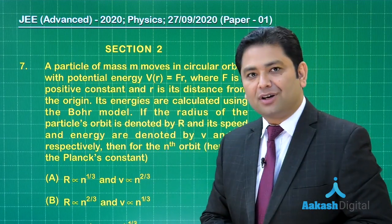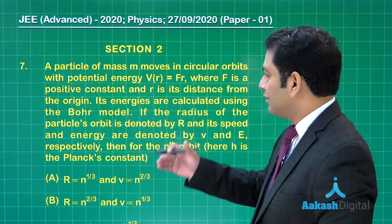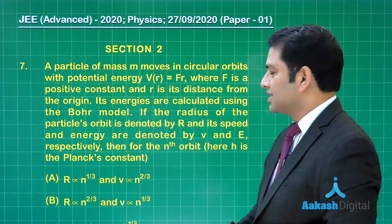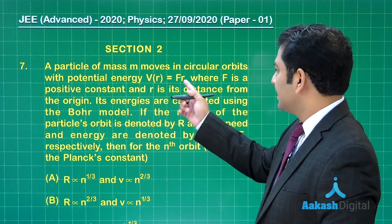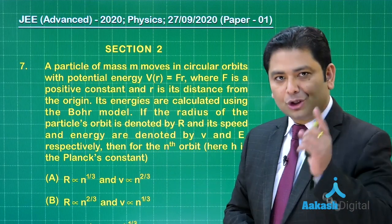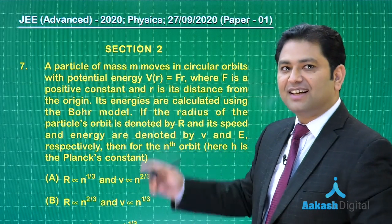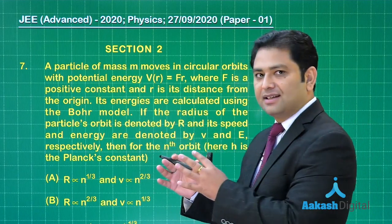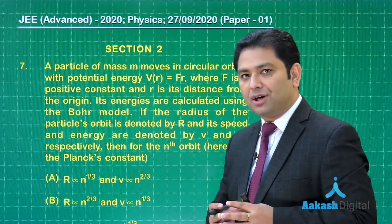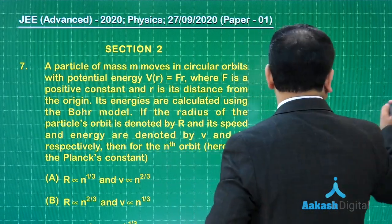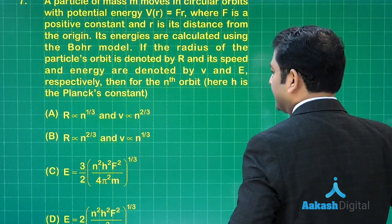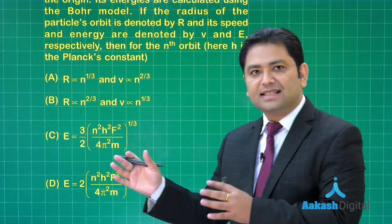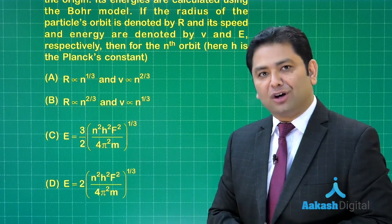The seventh question is from modern physics and the concept of Bohr's model has been used. If you've gone through the question, you could see there is a potential energy which equals f times r. Not to confuse this f with force, it is a positive constant. Based on this, involving Bohr's model, we need to comment on the dependence of radius and speed with n, that's about options A and B, and C and D demand the value of energy.